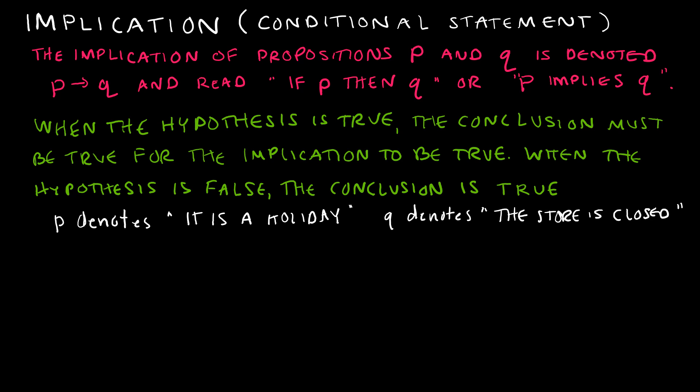The implication, sometimes called a conditional statement, means something is true based on the condition that something else is true. An implication of propositions p and q is denoted p → q, and is read either 'if p then q' or 'p implies q,' both of which mean the same thing.